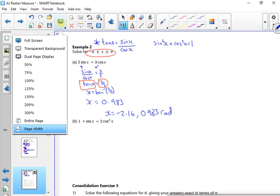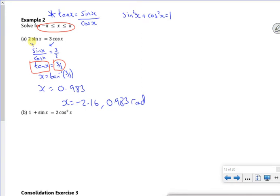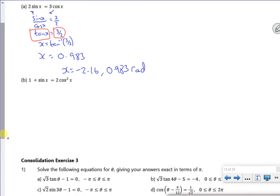Right, next one. It's a bit awkward. So I've got this one here now. Remember, it's always the bit with a square bit changed. So I've got 1 plus sin x is 2 lots of minus 2 sin squared x.